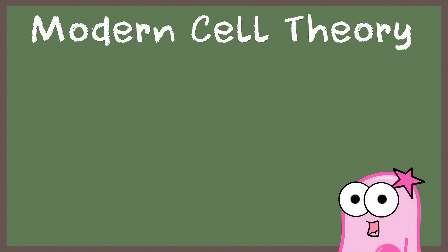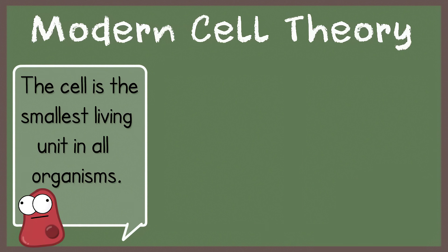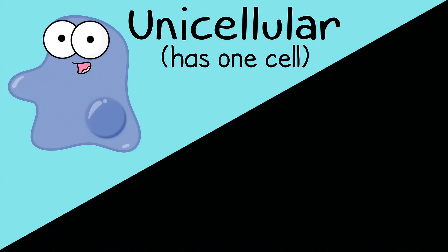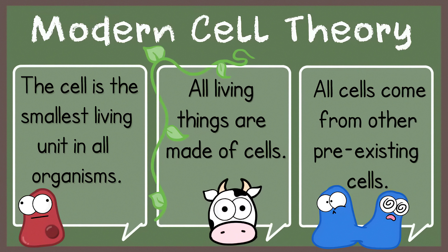In fact, it really makes you reflect on some of the incredible statements of the modern cell theory. First, the cell is the smallest living unit in all organisms. Second, all living things are made of cells — one or more cells. The amoeba I observed was a single-celled organism, so unicellular. Humans are made of many cells, so multicellular. And third, all cells come from other, pre-existing cells.